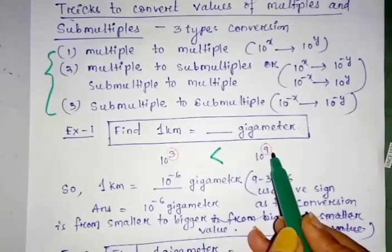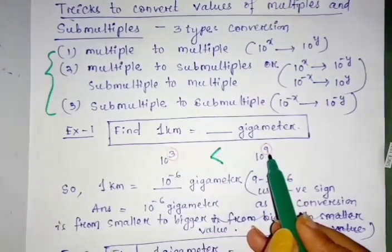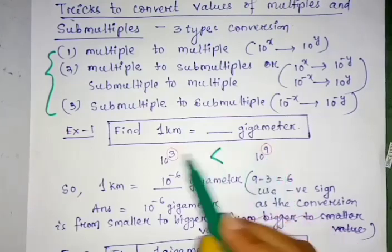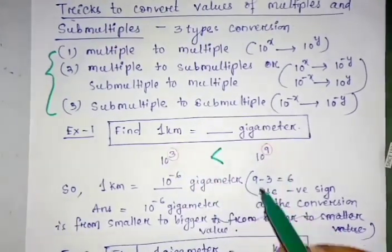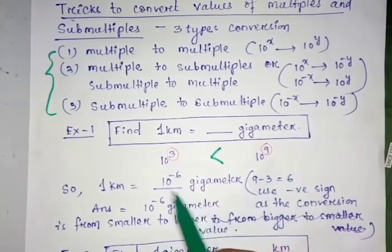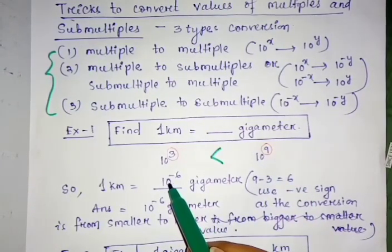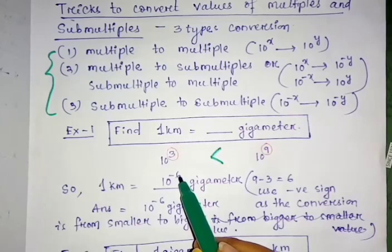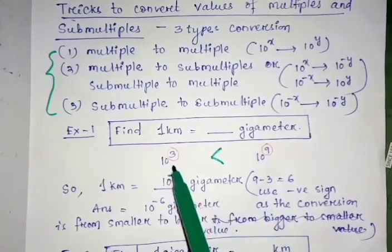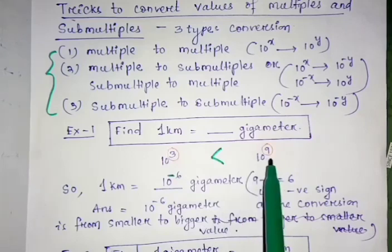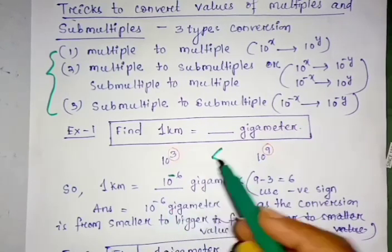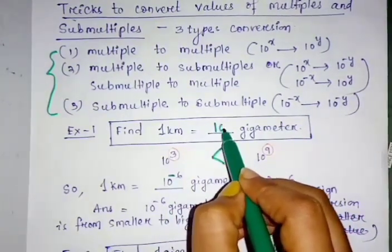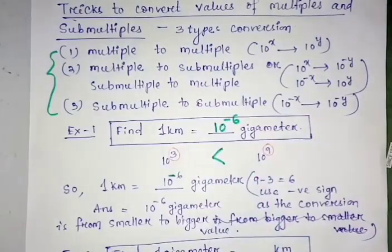Now check the powers irrespective of the negative signs. It has power 9 and it has power 3. So subtract like this: 9 minus 3 equals 6, and write down the value 10 to the power 6. After that, use a negative sign as the smaller quantity is converted into a bigger quantity. Finally, the final answer is 10 to the power minus 6, or 1 km equals 10 to the power minus 6 gigameter.